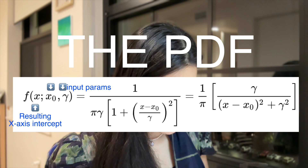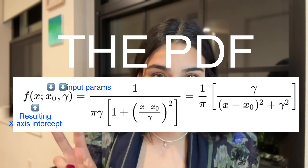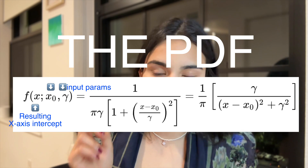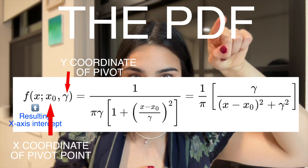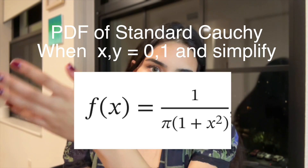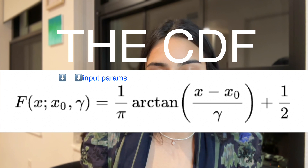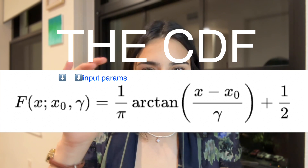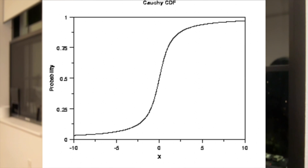Now that we understand a little bit about the generative story, I'm going to write out the PDF of the Cauchy distribution and explain the parameters. This is the PDF of the Cauchy distribution. You can see there are two parameters: first, x0, which represents where we're putting our spinner's pivot point — what are the x and y coordinates of where we're placing it — represented by x0 and gamma. For the standard Cauchy distribution, people set x to 0 and gamma (the y coordinate) to 1. The CDF takes in the same parameters of the x and y coordinates of where we're putting our spinner and returns all the probabilities before that value, integrating the PDF thus far.